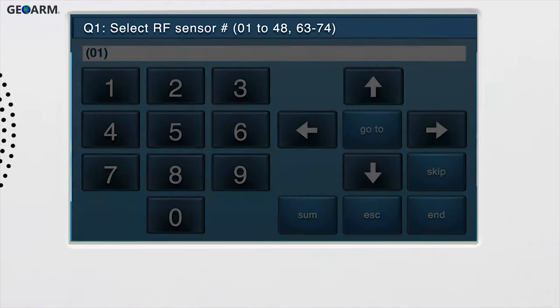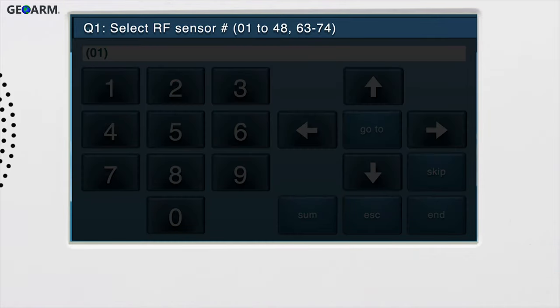You'll see Q1, select RF sensor number 01-48, 63-74, displayed in the upper ribbon of the screen. System Configuration is navigated via Questions and Sub-Questions. Wireless zones are programmed in Q1, so we're already on the correct question for wireless devices.